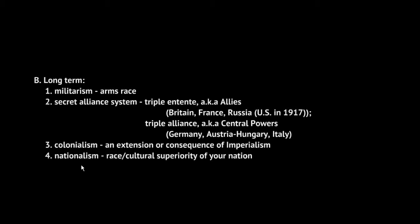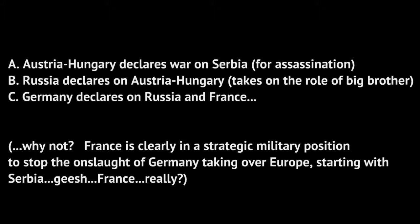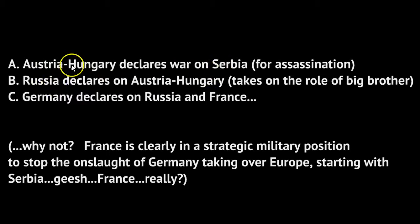Nationalism is another cause of war — the idea that your country, your race, your culture is better than everybody else. We see this specifically in the Austria-Hungary conflict with Serbia. Austria-Hungary wanted a piece of Serbia, and Serbia wasn't going to have anything to do with it. On July 28, 1914, shortly after the Archduke is assassinated, we see the declaration of war. Austria-Hungary declared against Serbia because they allowed the Black Hand group to exist in their land. The secret alliance between Russia and Serbia then takes effect, and Russia declares war on Austria-Hungary.